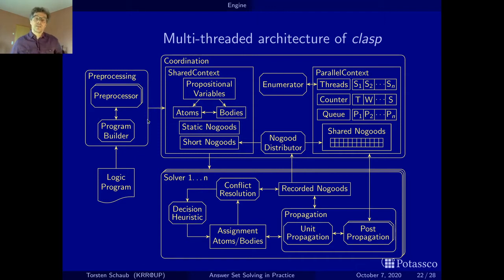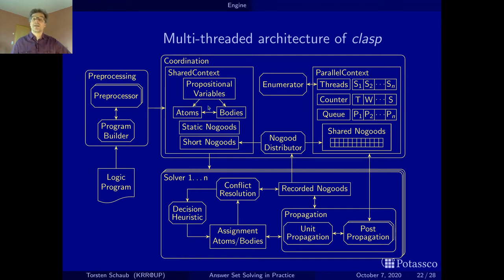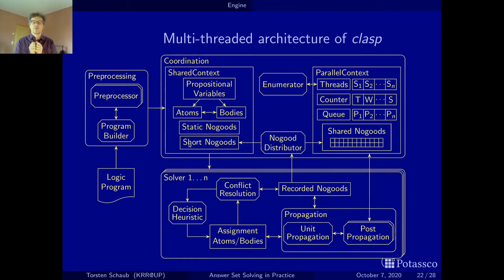Once things are preprocessed, they enter the data structures. In a multi-threaded setting we have a shared context which holds data structures for all different solver instances. This includes an abbreviation for the dependency graph — where atoms occur in which bodies — and propositional variables for both atoms and bodies. This data structure also stores short no-goods: short boolean constraints of size two and three, held globally and not at each individual solver.